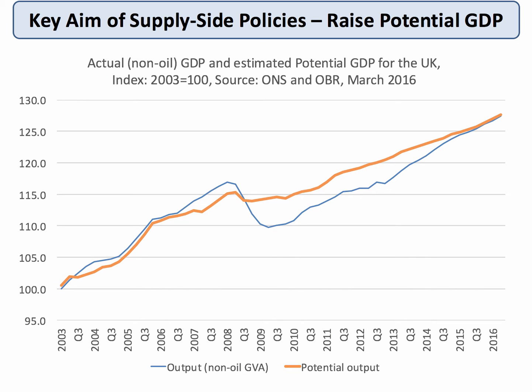One of the aims of supply-side policies in the economy is to increase a country's potential national output — in other words, raise the trend level of GDP. A key thing is how does a country do that? What are the mechanics of getting that orange line moving upwards effectively? If we want to link it to some concepts, it's the long-run aggregate supply curve shifting out, or it's an outward shift of the production possibility frontier.